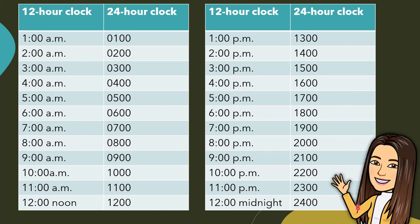Again, in 24-hour clock, the first two digits represents the hour and the last two digits represent the minutes.